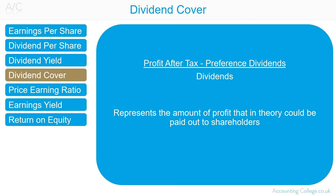Dividend Cover is profit after tax less preference dividends divided by dividends paid. It is a measure of an organisation's ability to pay dividend, showing how many times over the profits could have been used to pay dividend. For example, if an organisation's dividend cover is 2, this means the organisation's profit was twice the amount of dividend paid out to shareholders. Generally, an organisation aims to sustain a dividend cover of 2, in order to have adequate financing through retained earnings while providing a reasonable return for shareholders.